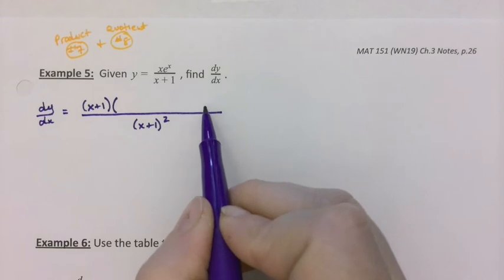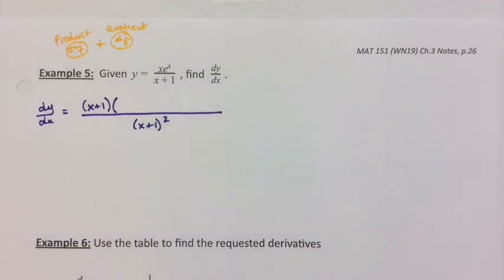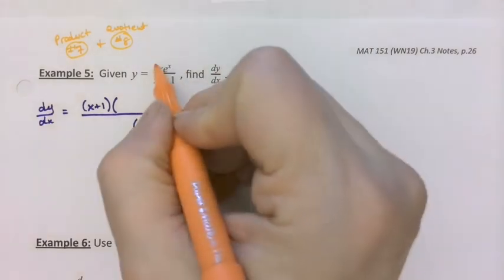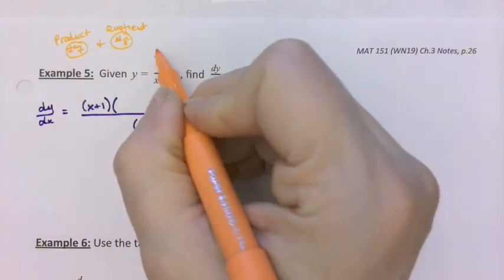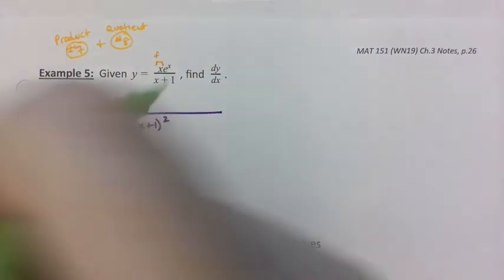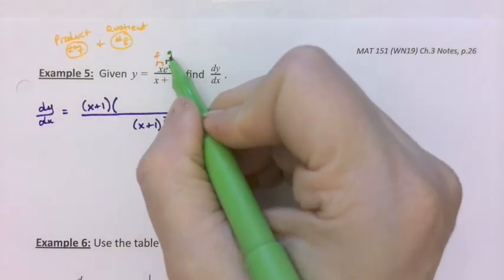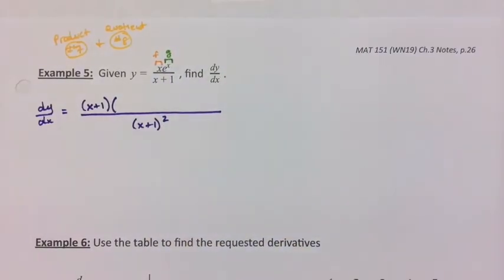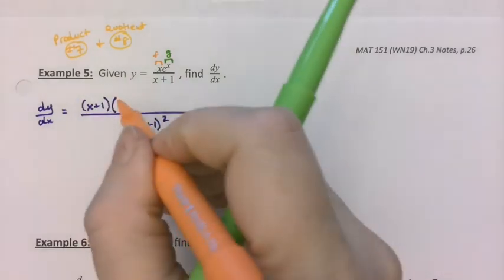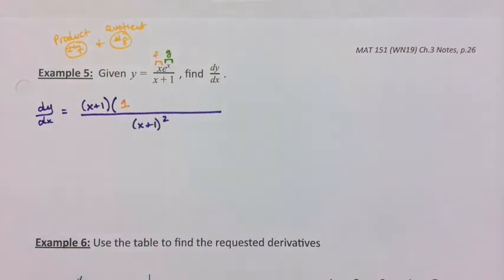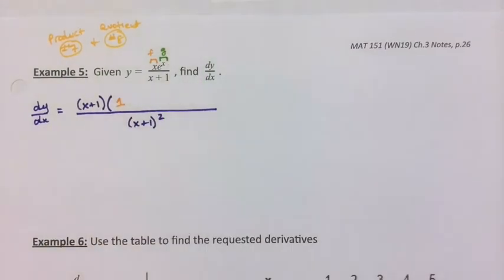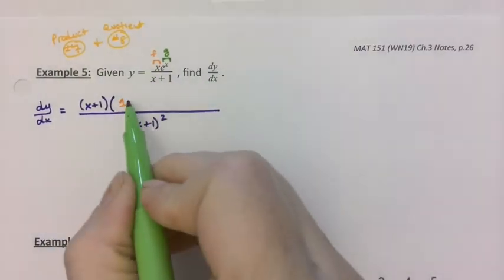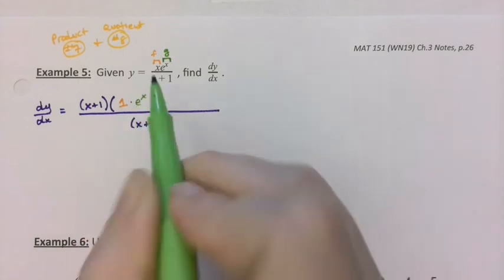That's going to take some doing because the derivative of the numerator function is going to require the product rule. If you look at your numerator, you have a little f and a little g next to it — they're multiplied. So I take the derivative of x, which is 1, times g — not the derivative of g, which is g — e to the x, that's my g function.